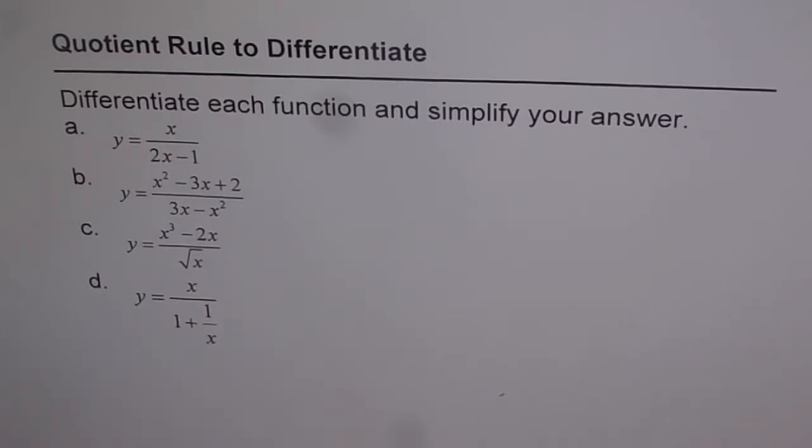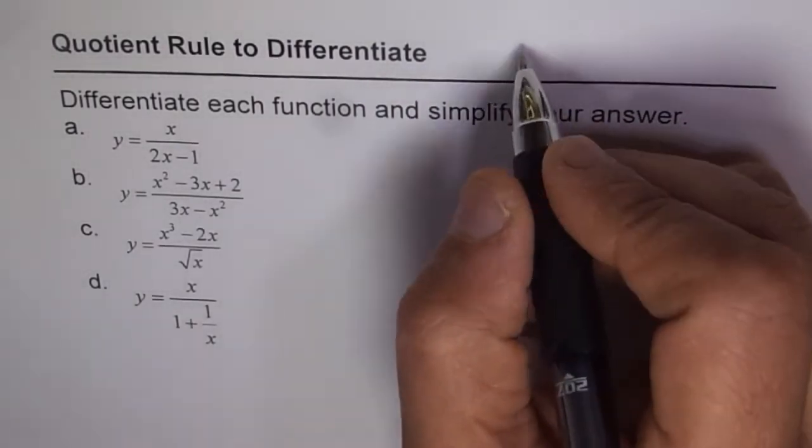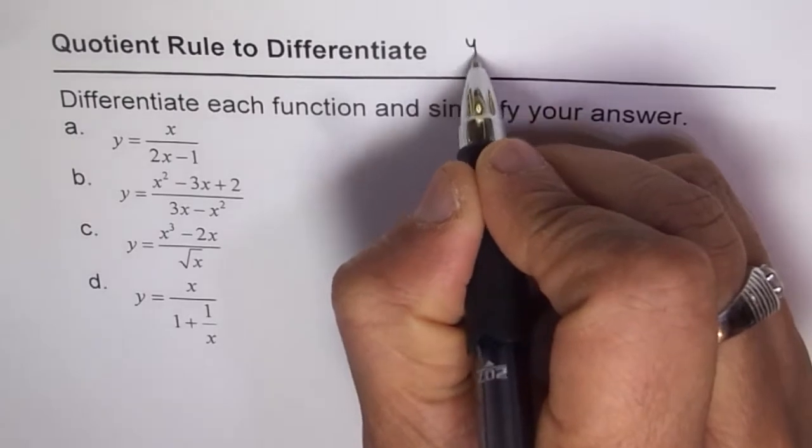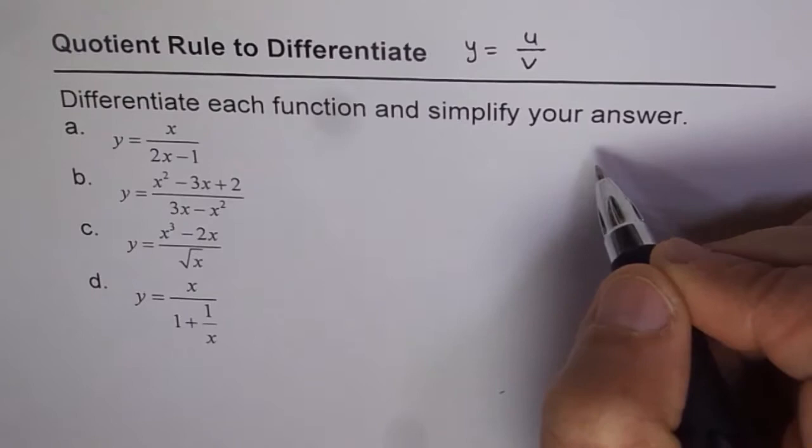Now the rule, this rule I hope you remember that if you want to, if the function is y equals to u over v where u and v are functions of x.